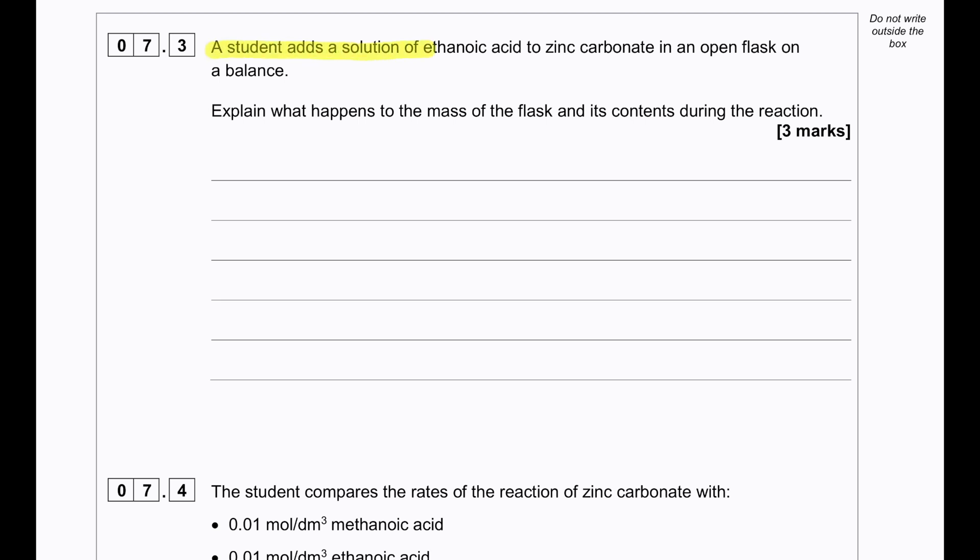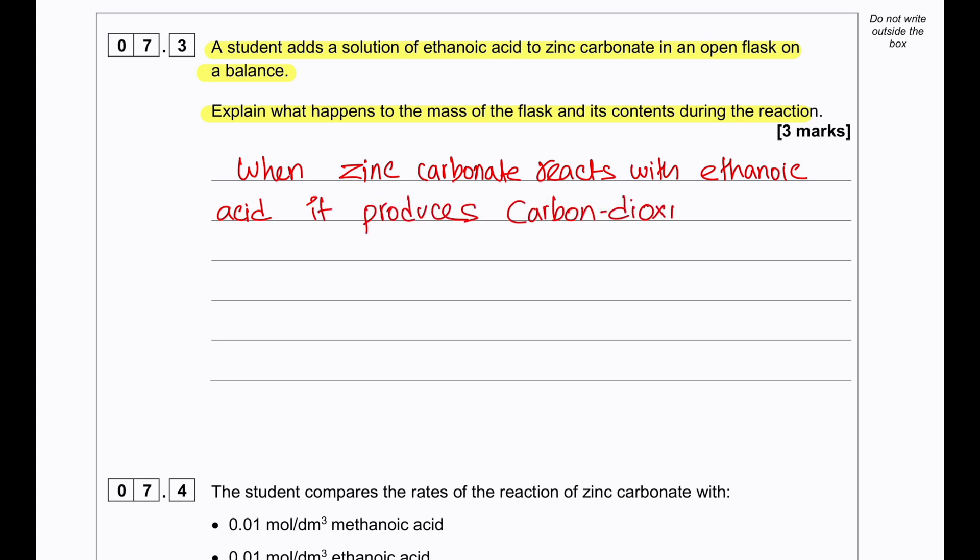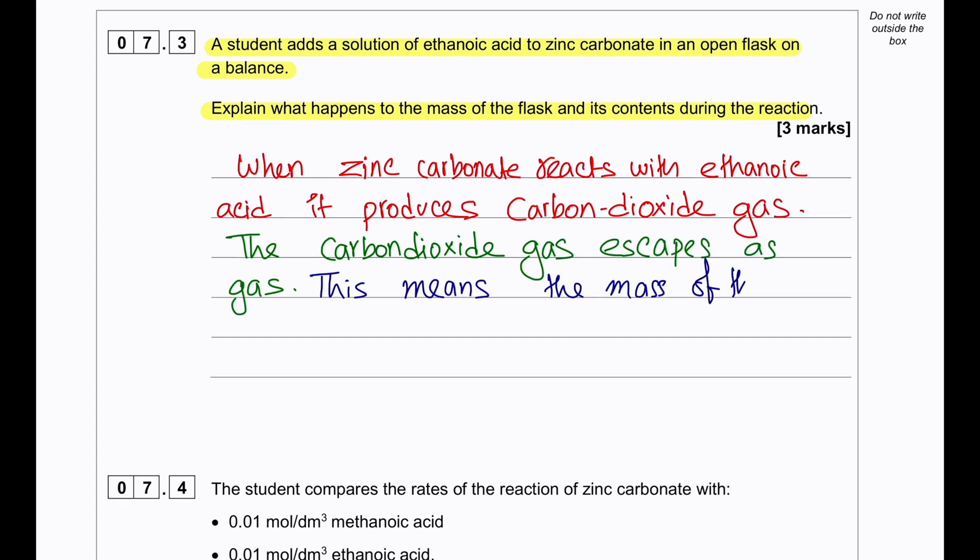A student adds a solution of ethanoic acid to zinc carbonate in an open flask on a balance. Explain what happens to the mass of the flask and its content during the reaction. When zinc carbonate reacts with the acid, ethanoic acid, it produces carbon dioxide. So the mass of the flask and the content will decrease because the carbon dioxide that is produced will escape from the flask and as a result the mass will decrease.